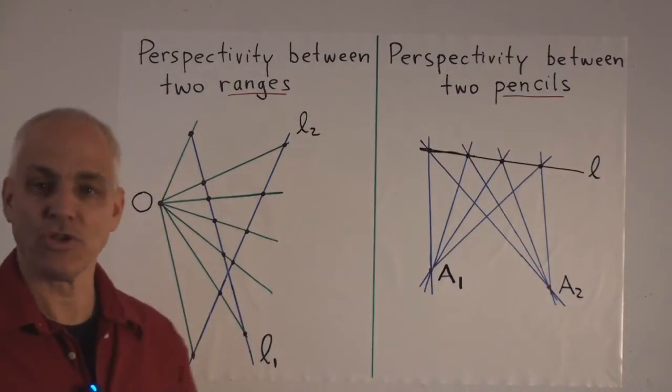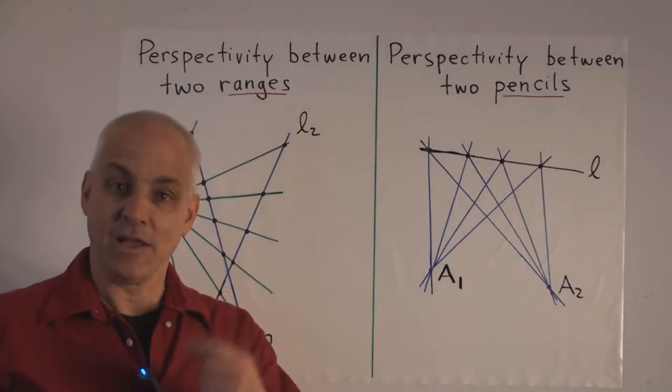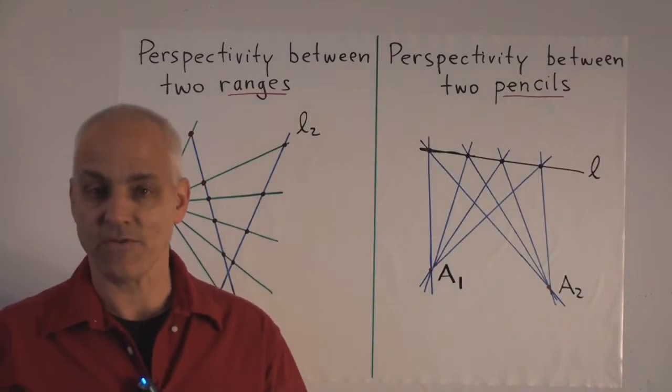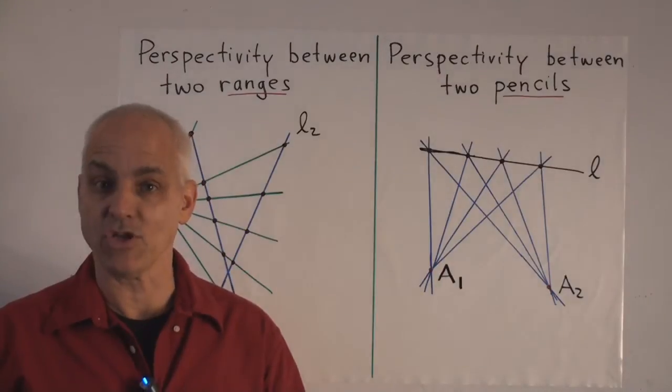So we're going to use both of these to construct what Steiner calls line conics and point conics. This is work of the 19th century by one of the great German geometers.